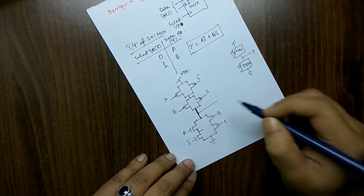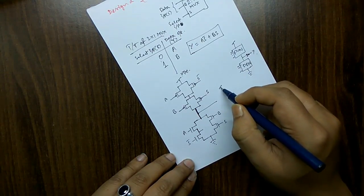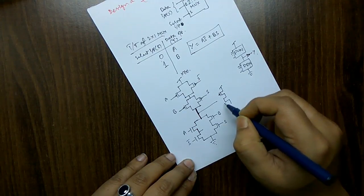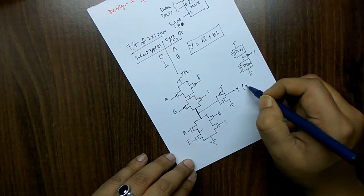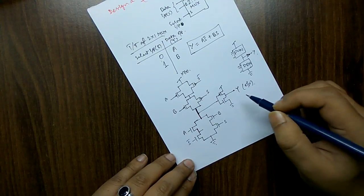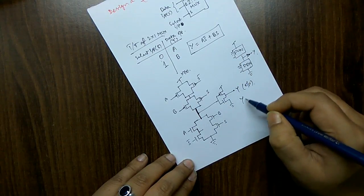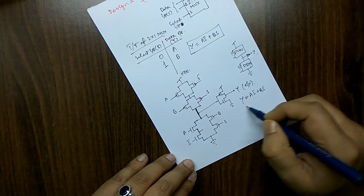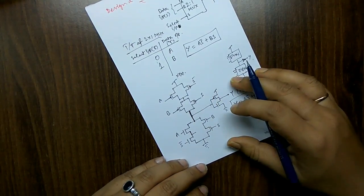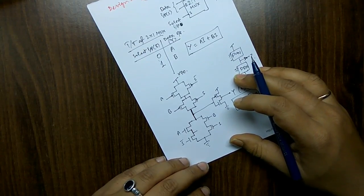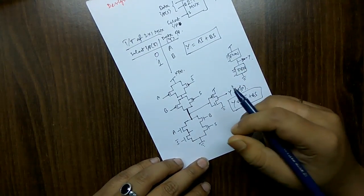As we know, automatic inversion occurs in CMOS, like a CMOS inverter. We can then get the final output, which is the inverted output of the circuit. The final output of the multiplexer circuit is Y = A·S̄ + B·S. This is how demultiplexers, decoders, and encoders — the same combinational circuits — can be easily designed using VLSI. Hope this tutorial helps you for designing such combinational circuits using VLSI technology. Thank you.